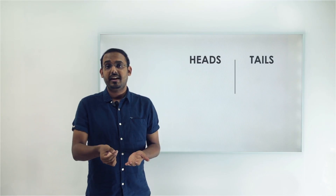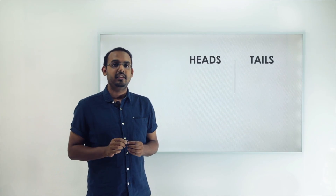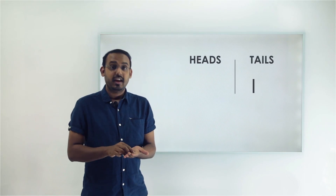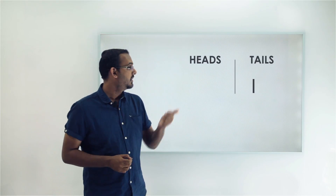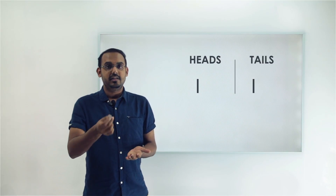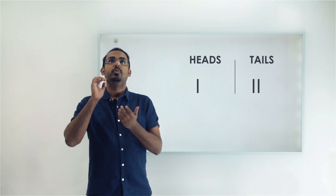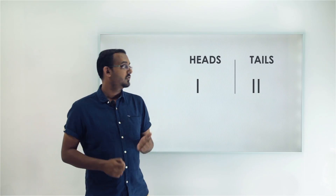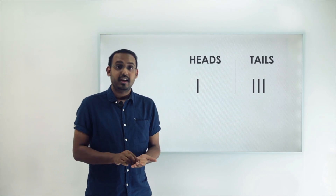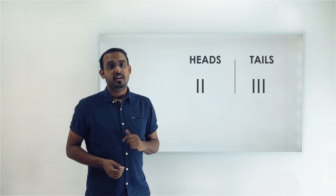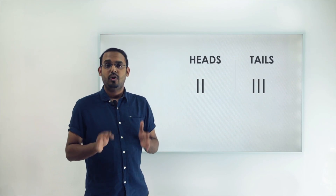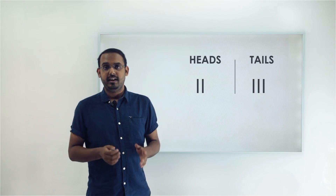The first toss: tails — 1 tails. Second: heads — 1 heads. Third: tails — 2 tails. Fourth: tails — 3 tails. Fifth: heads — 2 heads. After 5 tosses I have 3 tails and 2 heads.